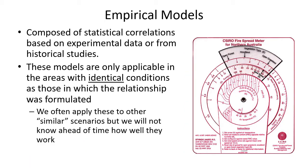On the other end of the spectrum are empirical models - basically statistical correlations that come from either specific experiments or historical studies and observations of real-world fires. Theoretically these models are only applicable to the identical conditions under which the correlation was developed. They're often applied to similar situations, but we won't have a good idea of how well they'll work ahead of time.